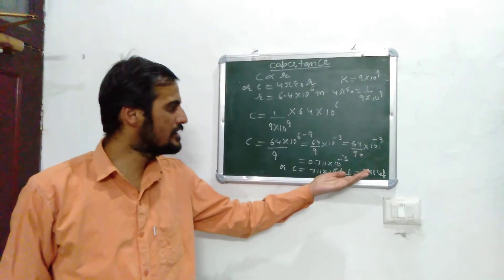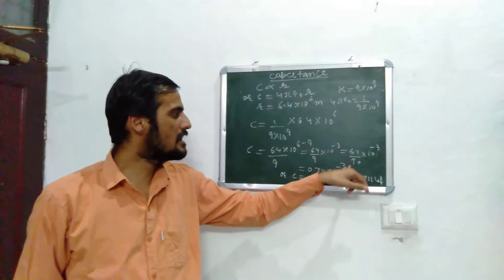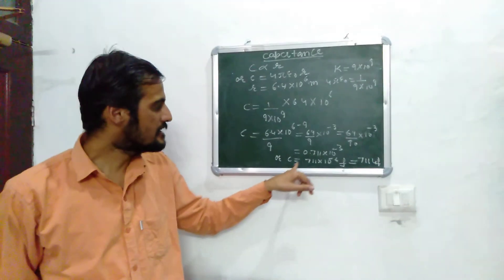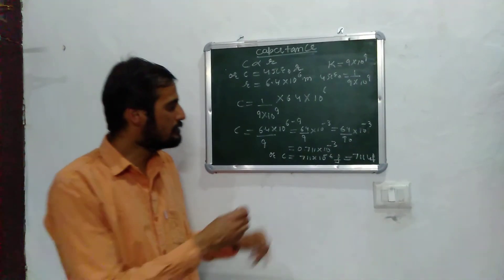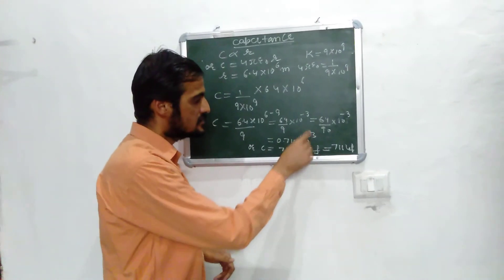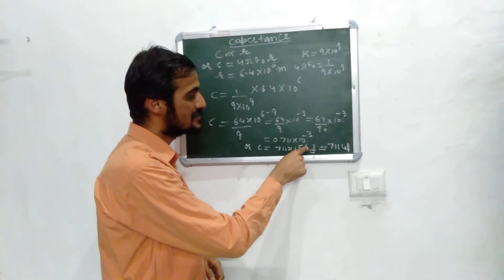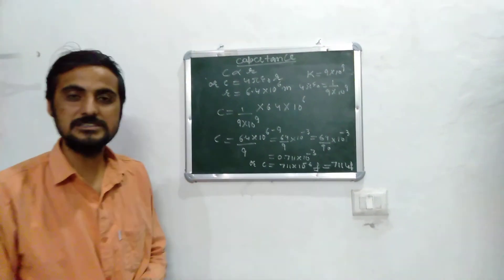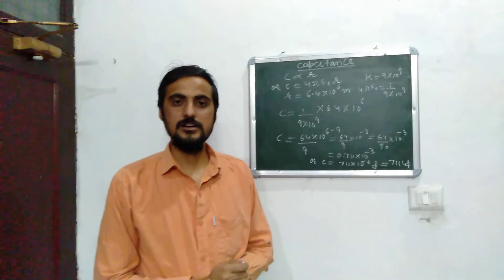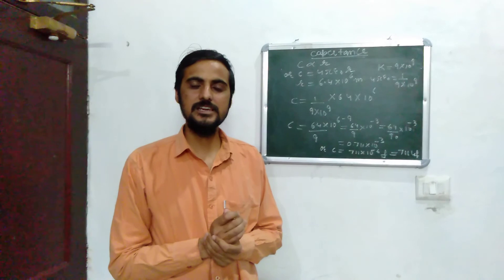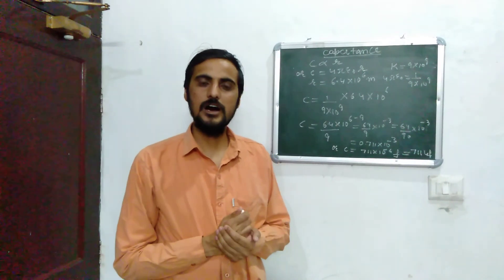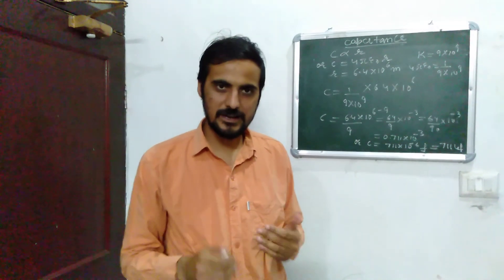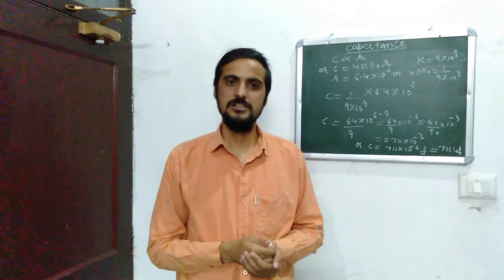So the capacitance of the Earth is 711 μF. That is all for today's lecture. I hope you understood well. If you have any queries, please contact my WhatsApp number. Thank you.